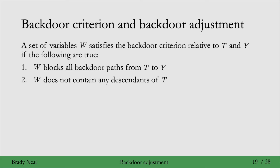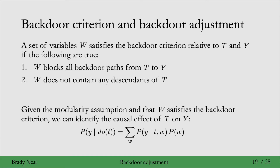Then we get the backdoor adjustment. Given the modularity assumption and that w satisfies the backdoor criterion, we can identify the causal effect of t on y. This is the same equation we saw when we applied the truncated factorization to that simple graph where x was a confounder of the effect of t on y, but the backdoor adjustment works for general graphs. If w satisfies the backdoor criterion, we say that w is a sufficient adjustment set, because w is sufficient to adjust for to get the causal effect of t on y.